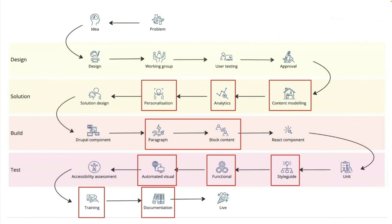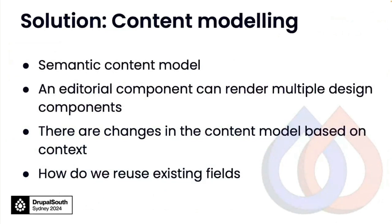Content modeling: we've got a semantic content model. What I mean by that is we've got a design component that shows links on a web page, but we've got six or seven design components that show links on the web page. The content model just tells the editor 'I want links on a web page' — I don't care how it looks, I just want links. So they build that first, and then they change the style and pick the different components from the library based on the use case.